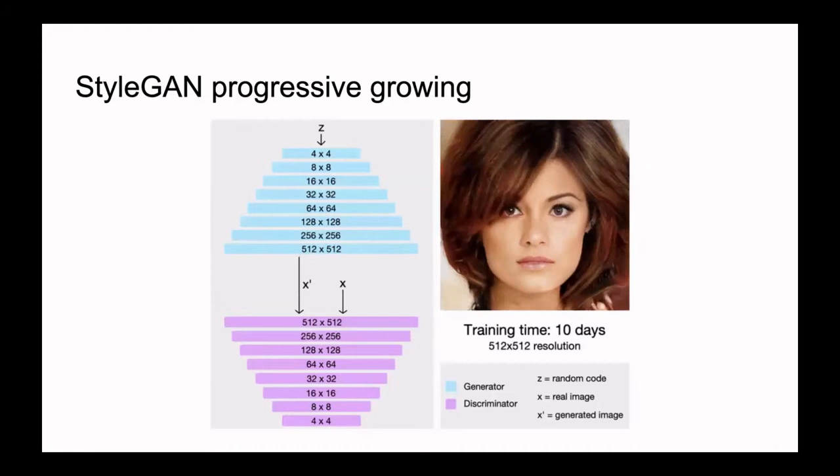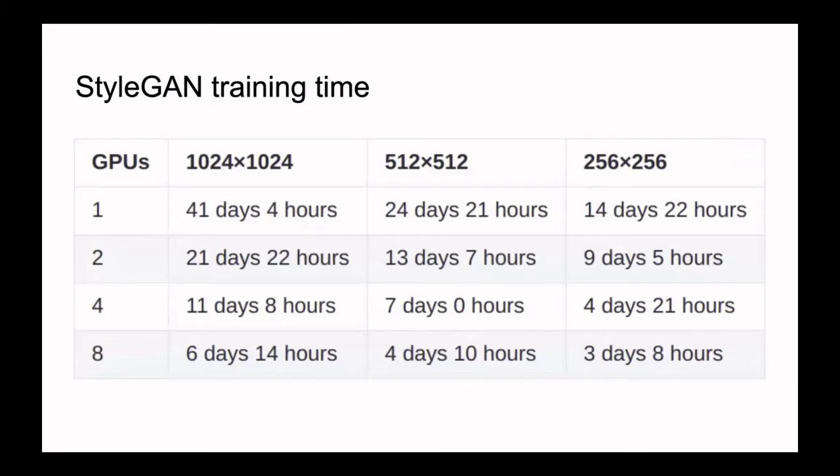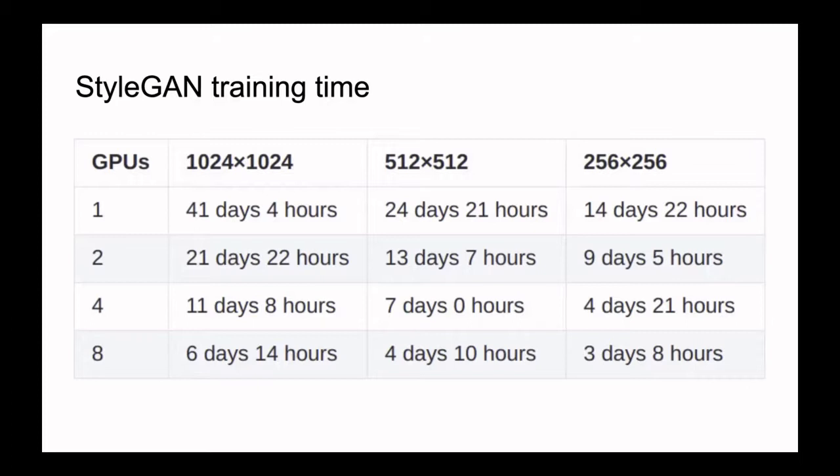There is a disadvantage of StyleGAN: training time is really big. If you have only one GPU and you want to get big images, you should spend 40 days of training, as NVIDIA says — and that's for the face domain. In other domains it could be a little less; for paintings it would probably be half that, a little bit faster. But anyway, you need a lot of NVIDIA GPUs.